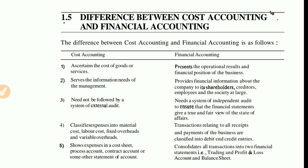The fourth difference: cost accounting classifies expenses into material cost, labor cost, fixed overhead, and variable overhead. There are many heads under which cost is classified. In financial accounting, however, all transactions are classified into just two entries — debit and credit — based on receipts and payments.